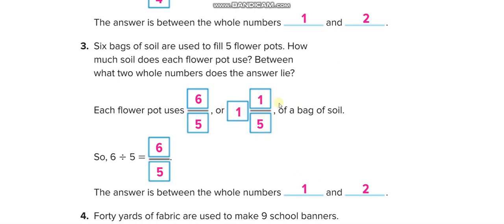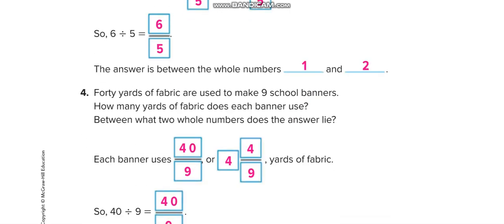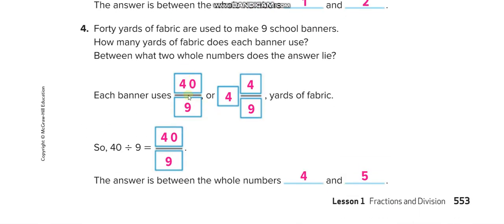For forty over nine: how many nines fit into forty? Four nines are thirty-six, so four fits. Subtracting thirty-six from forty leaves a remainder of four, giving the mixed number 4 and four-ninths. This fraction is between four and five.